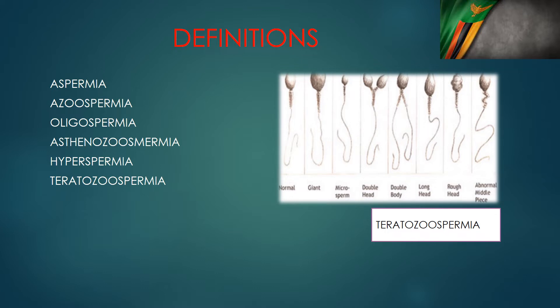Asthenozoospermia is poor motility of spermatozoa. Hyperspermia is a large volume of semen — anything around or above 5.5 mls would be called hyperspermia. Teratozoospermia is having a large proportion of abnormal sperm in the semen. So that's what these terms mean.